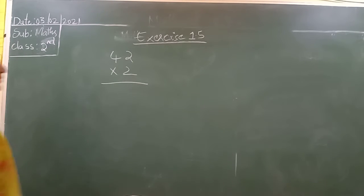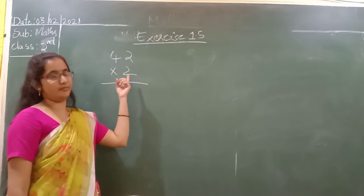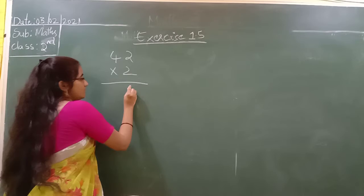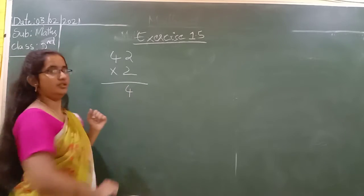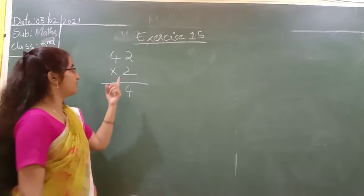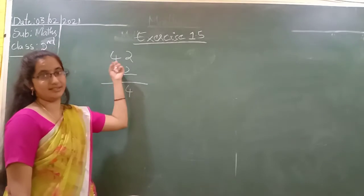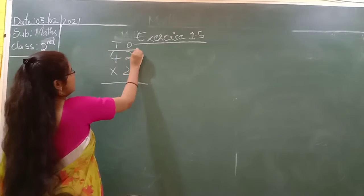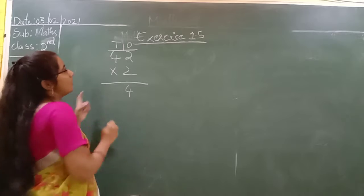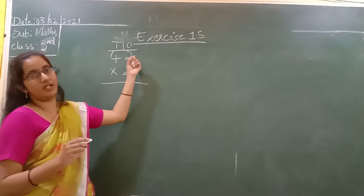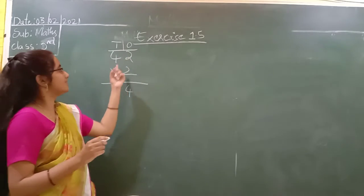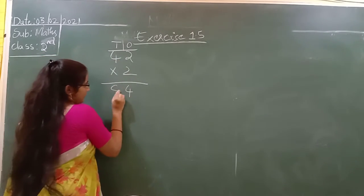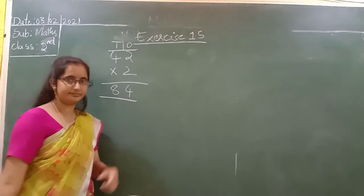First we have to multiply the 1's place digit. This is the 1's space. So first multiply with the 1's space: 2 into 4 is 8. Next we have to multiply with the 10's space: 2 into 4 is 8. So 84 is the answer.